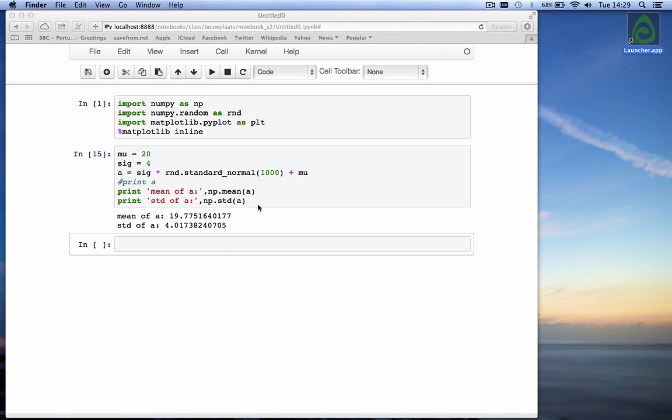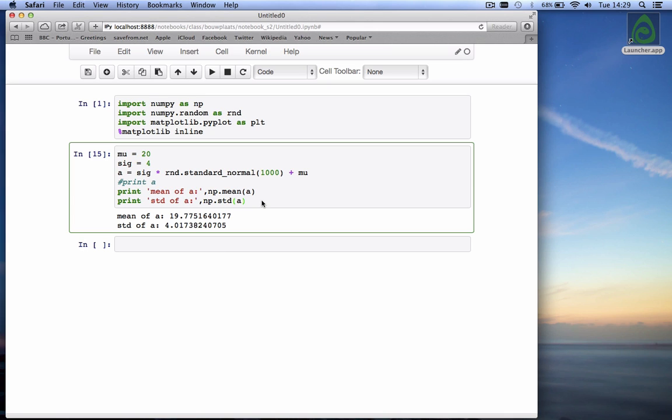Of course, if you run this again, we get a thousand different numbers with a slightly different mu and a slightly different standard deviation. And we can keep doing that.